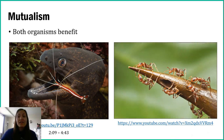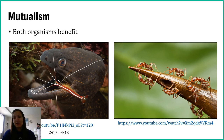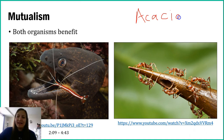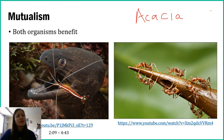Another example of mutualism is across kingdoms. The cleaner shrimp example was within the animal kingdom, but let's look at something that goes across kingdoms. Here we have an ant and a tree — the acacia ants and the acacia tree. In this relationship, the ants are acting as a defense mechanism for the acacia tree.